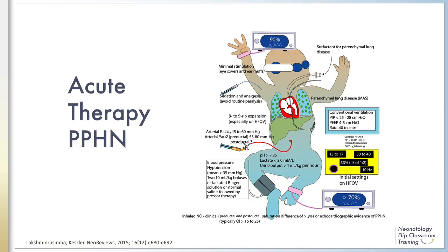The first component of PPHN management is to address the underlying disease state. For example, in RDS, surfactant therapy may aid in avoiding or improving PPHN by opening up collapsed alveoli and improving gas exchange. In meconium aspiration syndrome, the meconium can deactivate surfactant, so surfactant replacement is indicated for persistent hypoxemia. Similarly, the appropriate use of antibiotics in sepsis or pneumonia is critical.